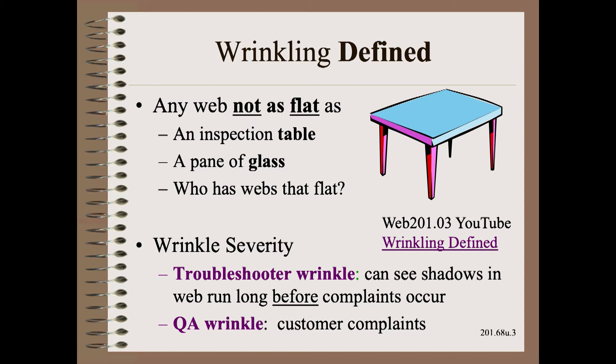If you know what to look for, you can see wrinkles far earlier than anyone would complain about. We call that level of severity a troubleshooter wrinkle. A QA wrinkle, on the other hand, is when the severity is so bad that someone complains. We want to get ahead of the problem by seeing the risk before someone complains.